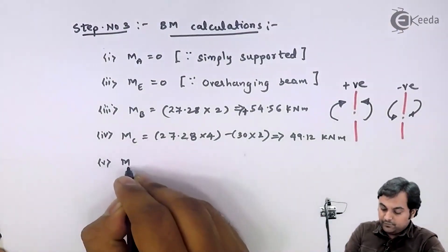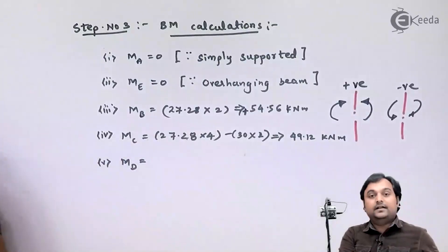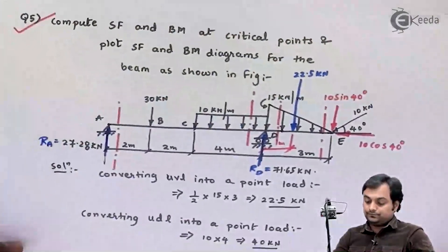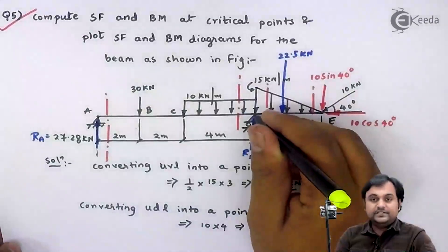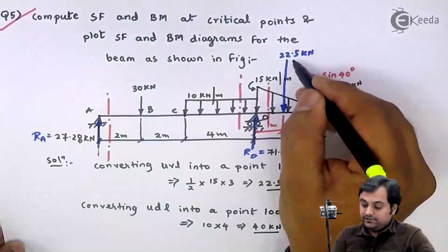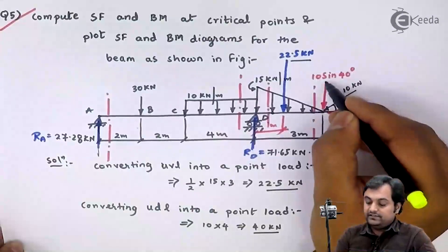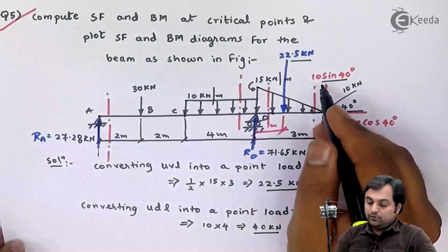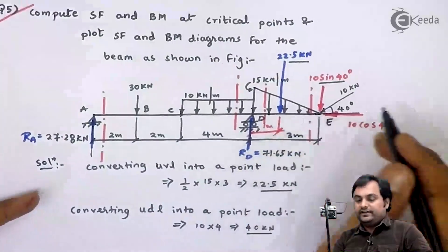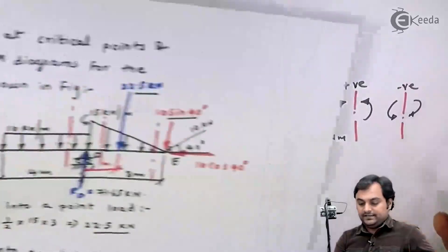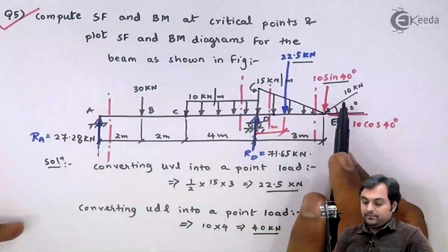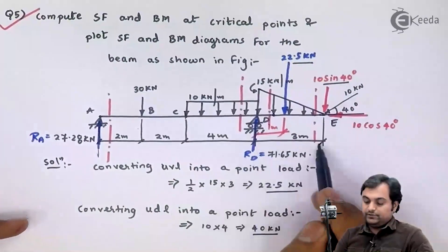Next I will calculate moment at D. For moment at D I will consider this point load of UVL and 10 sin 40. Both are producing clockwise moment to the right and clockwise moment to the right are negative. So here I have minus 10 sin 40 into 3.